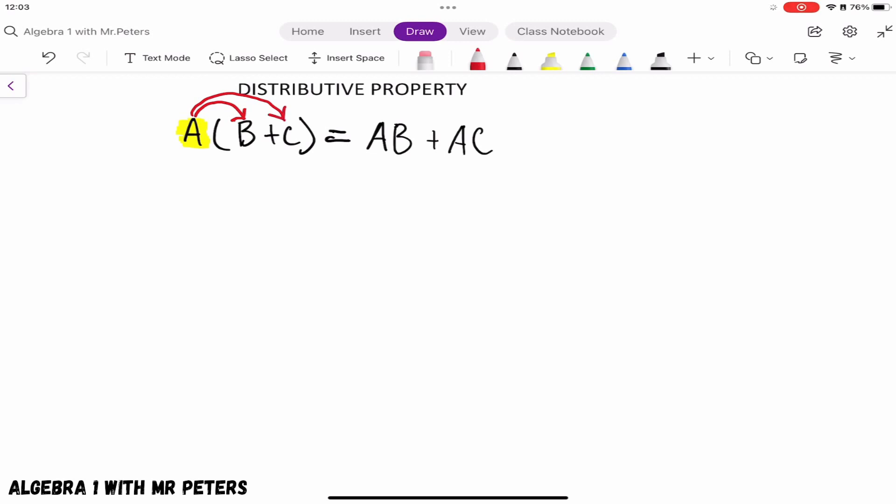Once we do that, we're going to have A times B plus A times C. If there are like terms, we can add them, but today we're only going to talk about the distributive property - we're not going to talk about adding like terms.